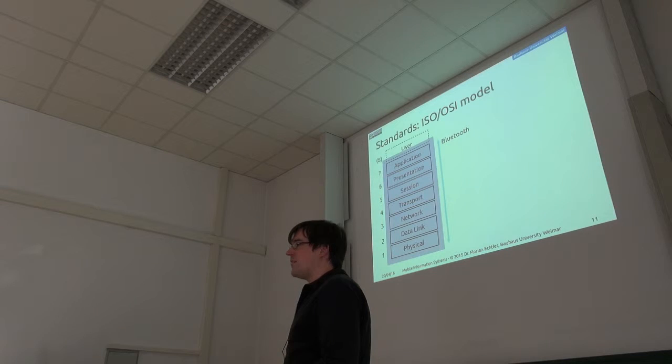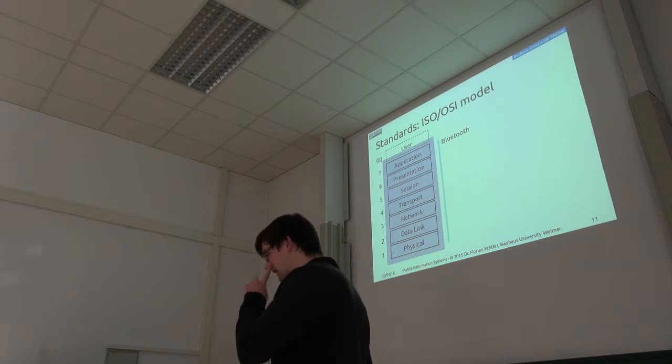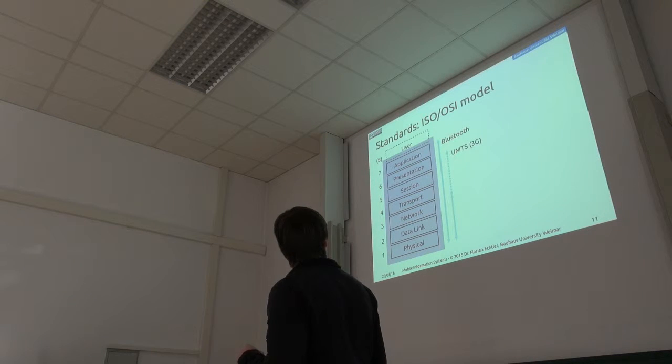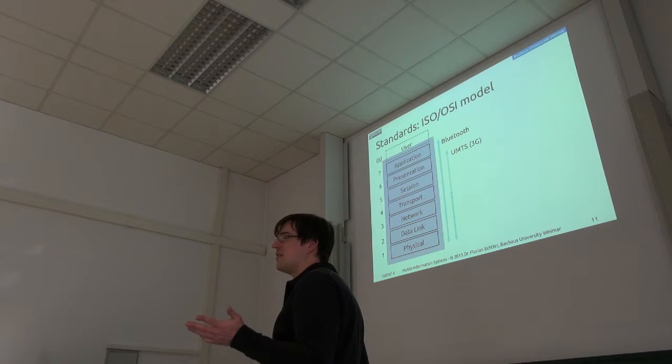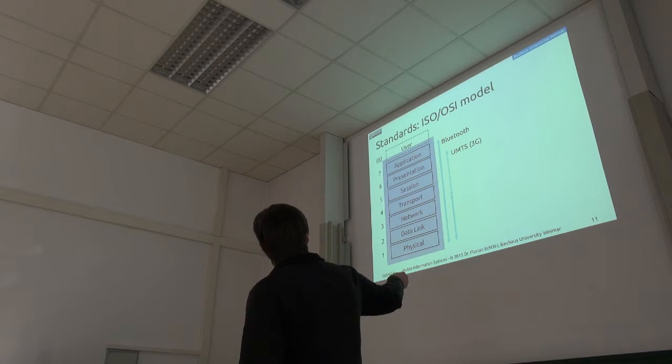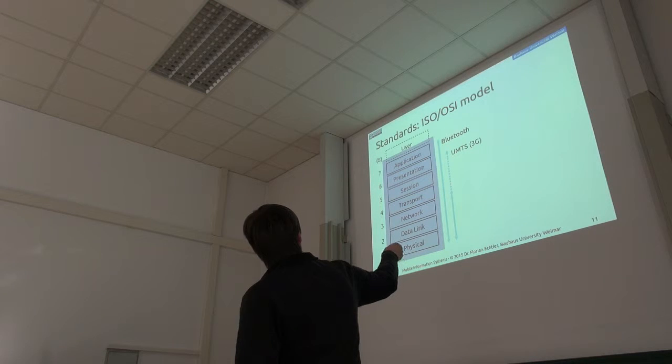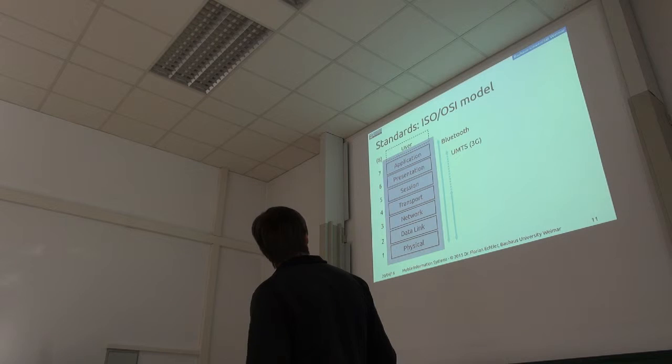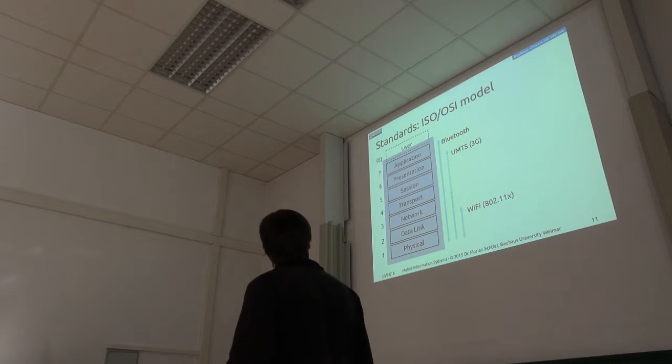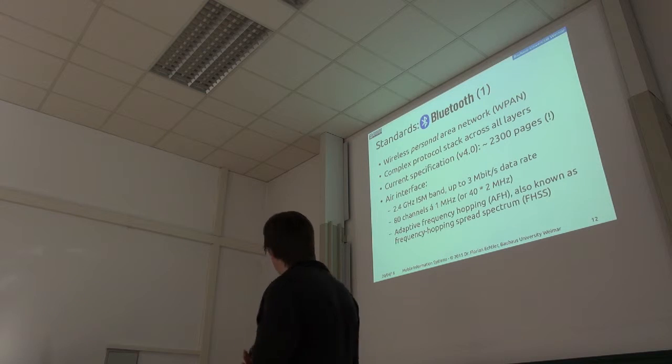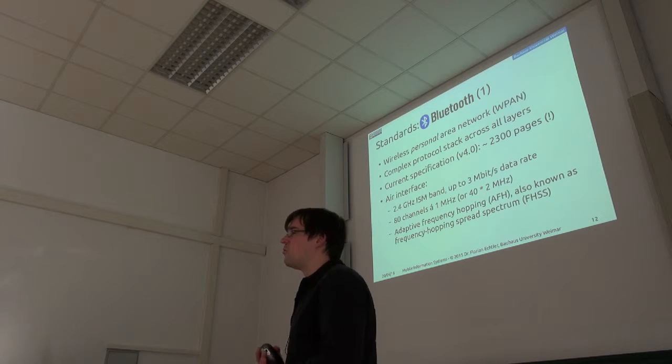So I've already mentioned that WiFi is on the lowest two layers. On the other hand, Bluetooth actually spans the entire stack. UMTS, for the most part, or all the cellular networks, are only in the lowest three layers, but they also have parts of them that go up to maybe layer six. WiFi is actually the simplest one of those; it's just on the lowest two layers, just what we discussed previously.